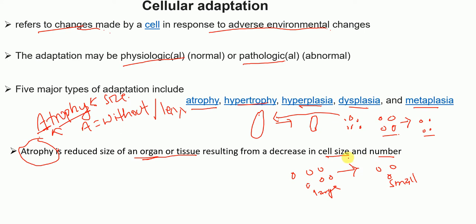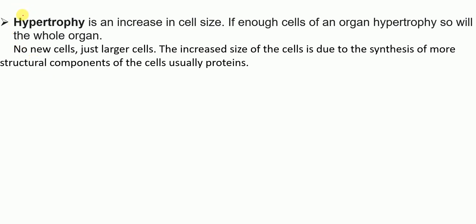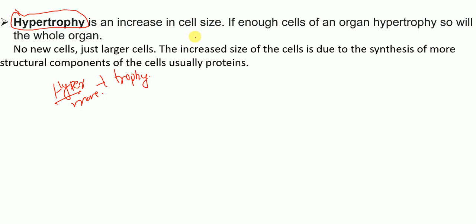Moving to hypertrophy. The word is made up of two parts: 'hyper,' meaning more, and 'trophy,' meaning size. So hypertrophy is an increase in cell size. When the cell size increases, the size of the organ will also increase. Importantly, there are no new cells — just larger cells.